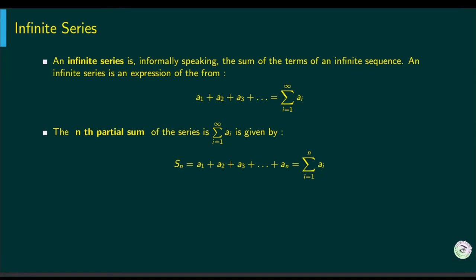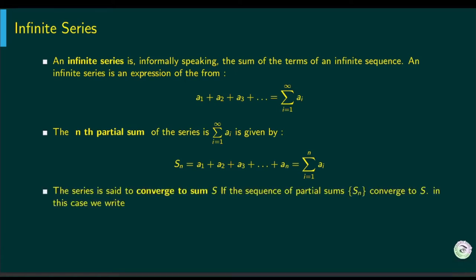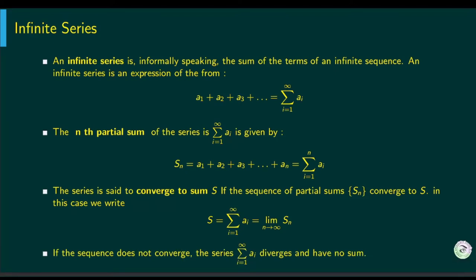The nth partial sum of the series is the sum of the first n terms. We say the series converges to sum S if the sequence of partial sums converges to S. In that case we write S equal to the infinite sum, or as the limit of the sequence of partial sums. If the sequence does not converge, we say the series diverges.